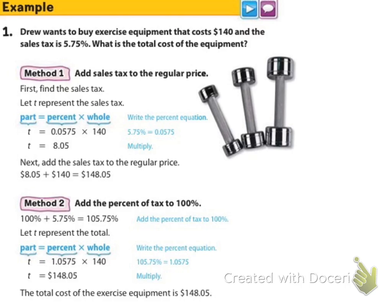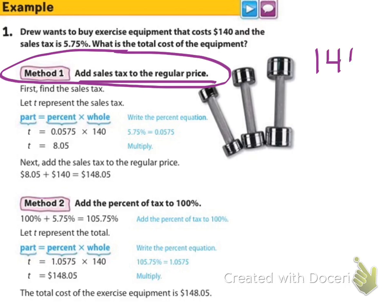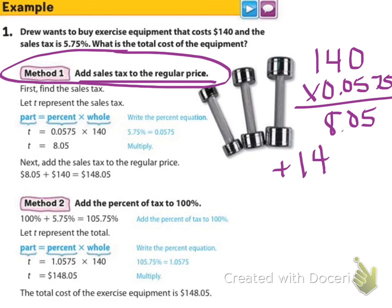Example number one says Drew wants to buy exercise equipment that costs $140 and the sales tax is 5.75%. What is the total cost of the equipment? So the first one is to add the sales tax to the regular price. And I want you to write that down. Method one, add sales tax to regular price. So if we're going to find the tax for $140, we're going to do 140 times 0.0575. And we're going to find that amount, which I'm just taking their answer as $8.05. And then we're going to take that amount and we're going to add it back into the regular price to get the total $148.05.